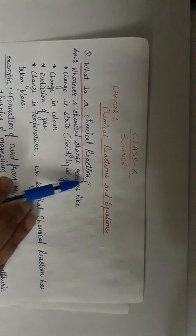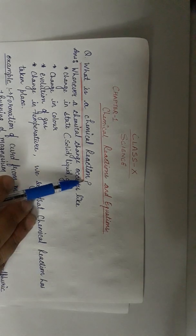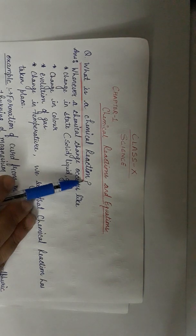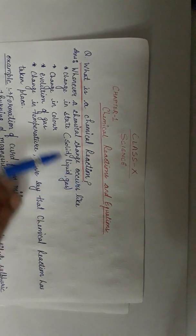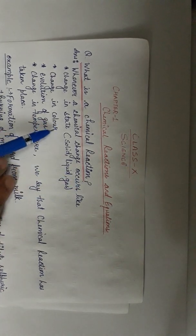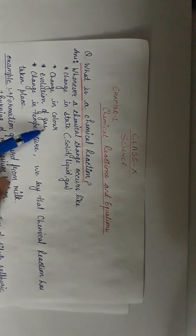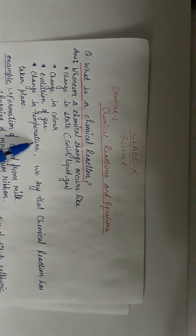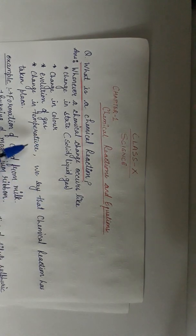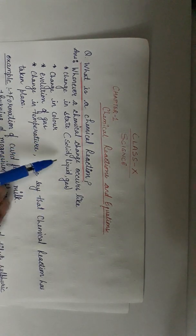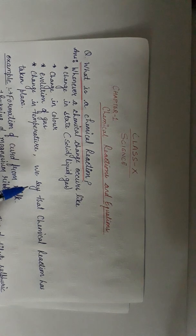What is a chemical reaction? We all have seen certain changes around us. Certain changes involve change in state, change in color, evolution of gas, or change in temperature. All these things happen when a chemical reaction takes place.